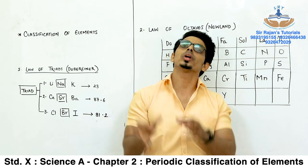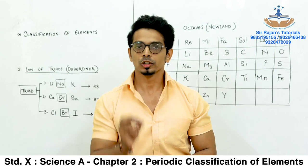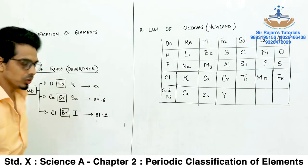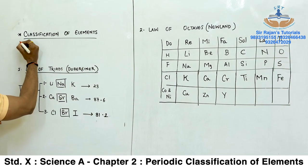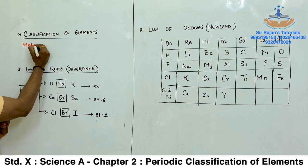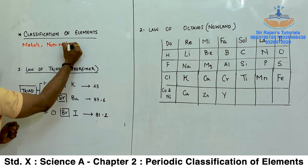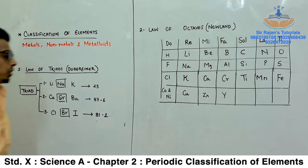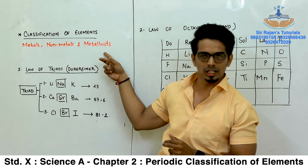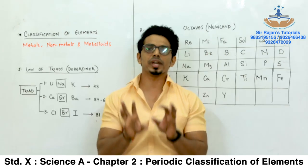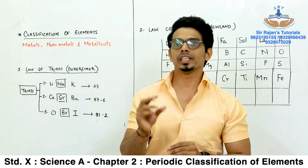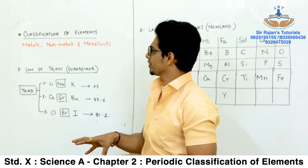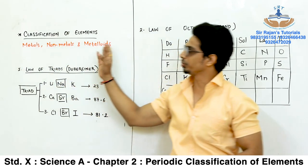There was a traditional way of classifying elements, which everyone knows from lower standards: classifying into metals, non-metals, and metalloids. This traditional classification is simply based on physical properties — for example, melting point, conduction of heat, and conduction of electricity. But this wasn't enough for detailed study. So in the year 1817, the first scientist who came into action for classifying elements was Dobereiner, a German scientist, who gave his own law known as the Law of Triads.